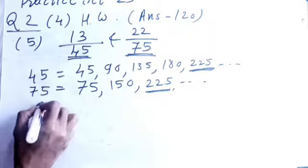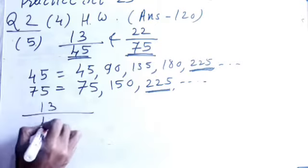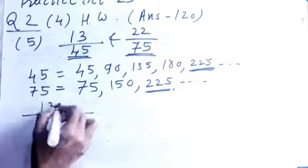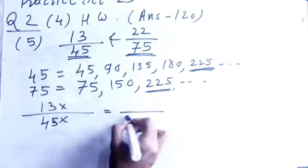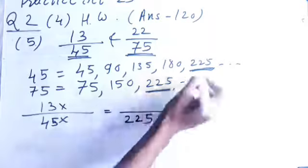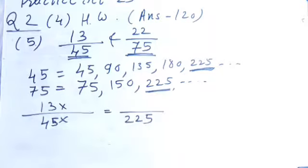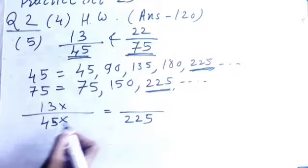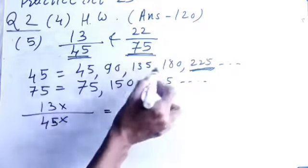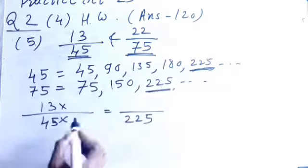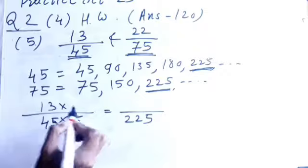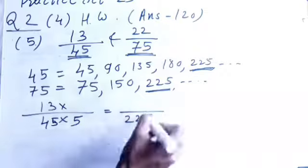Now, we have to make the denominator 225 because 225 is the multiple of 45 also and 75 also. So, what I have to do? 13 upon 45. Now, I need to get the denominator 225 because 225 is the common multiple. So, I have to multiply 45 by 5 to get 225. So, here if I multiply with 5, I get 225.